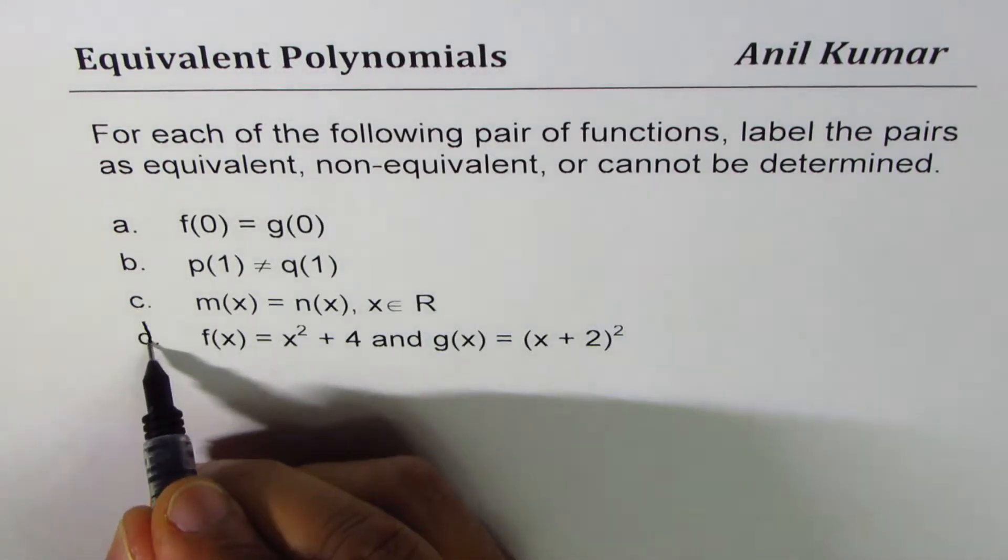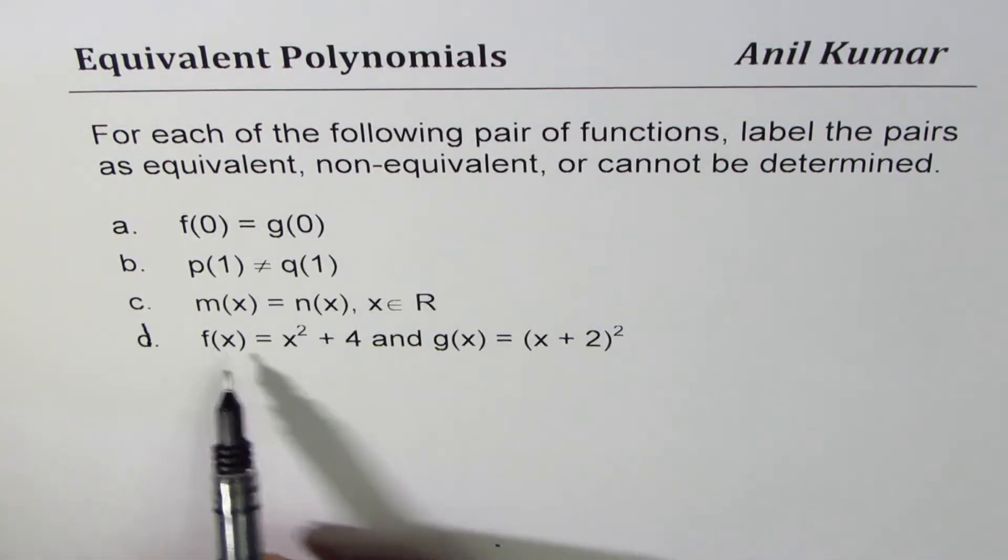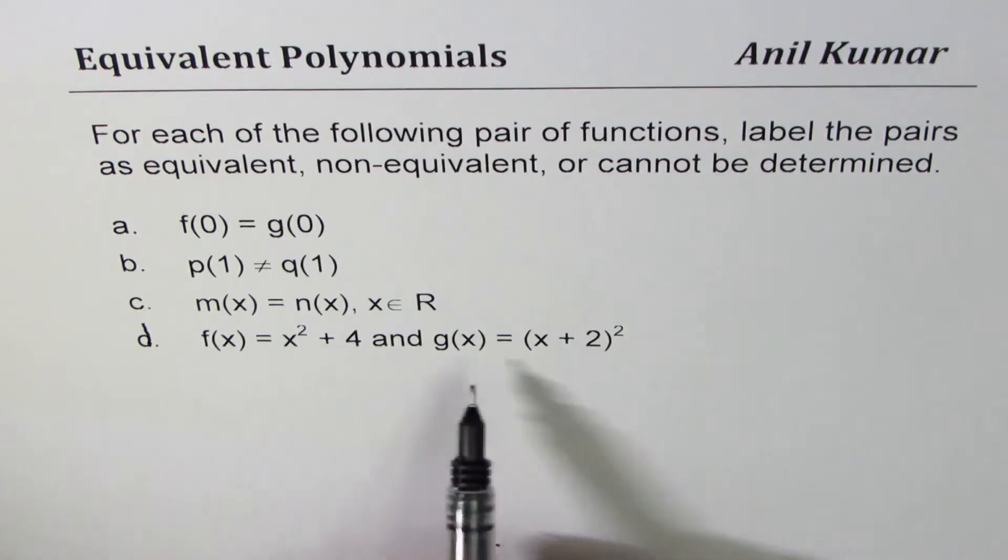And then we have d, which is f(x) equals x squared plus 4, and g(x) equals (x + 2) squared. We need to figure out whether they are equivalent, they're not equivalent, or we just can't determine since information is incomplete.